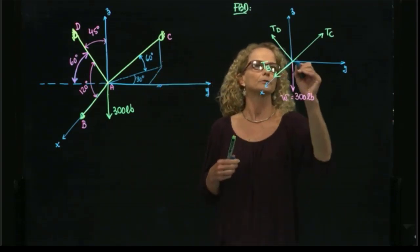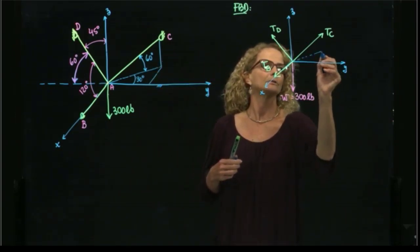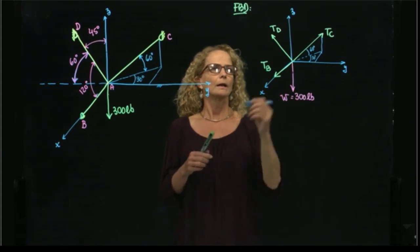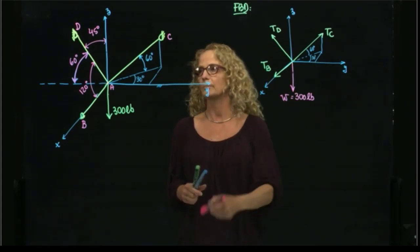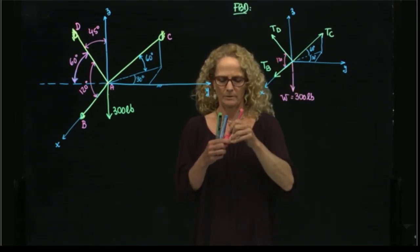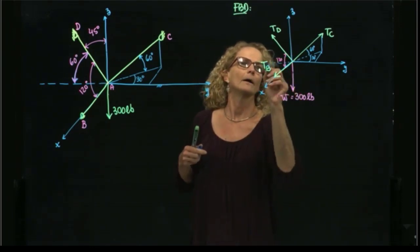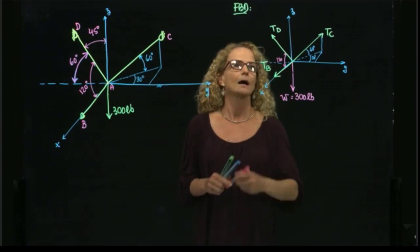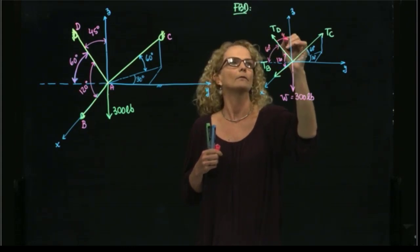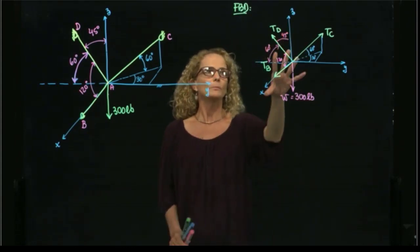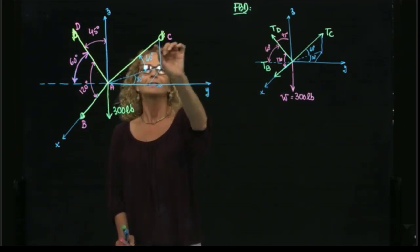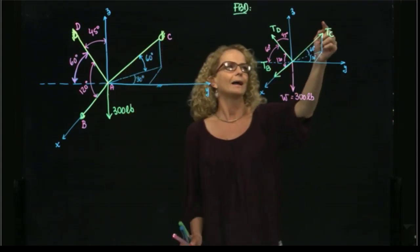I have information regarding the direction of this load. This is 60 degrees, this is 30 degrees. And I have information regarding the position of this load, which is 120 degrees between Y and the force is 60, and this is 45 degrees. My free body diagram is very similar to the actual original picture, but here I have the chord from the beginning to the end.